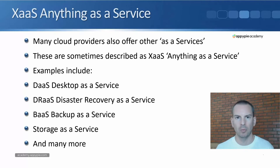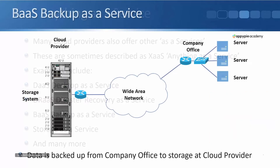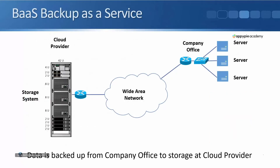The first example we mentioned is BaaS, backup as a service. This is suitable for small companies because it allows them to back up to an off-site location without having to go through the hassle of buying tape hardware and transporting the tapes off-site every day. With backup as a service, the company has their own on-premise solution — servers in their own office — and those servers are backed up to storage at the cloud provider.